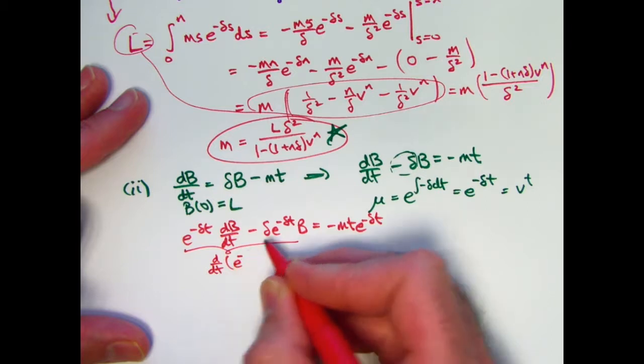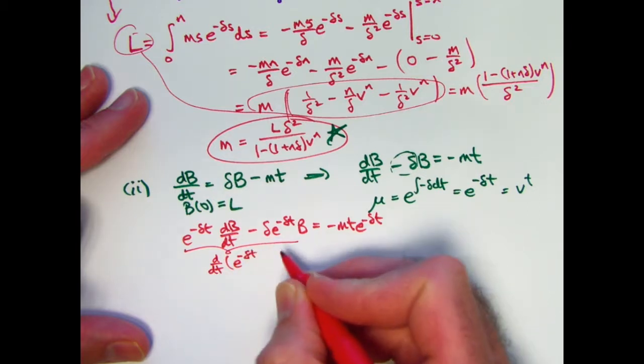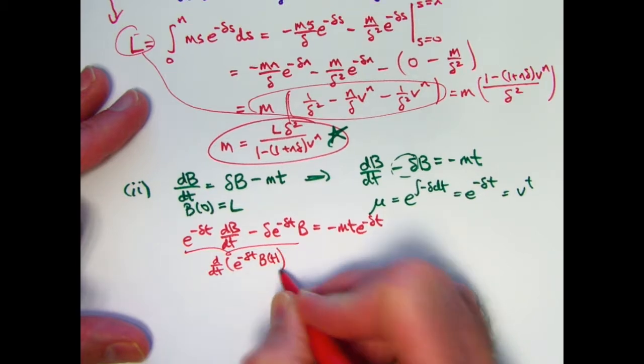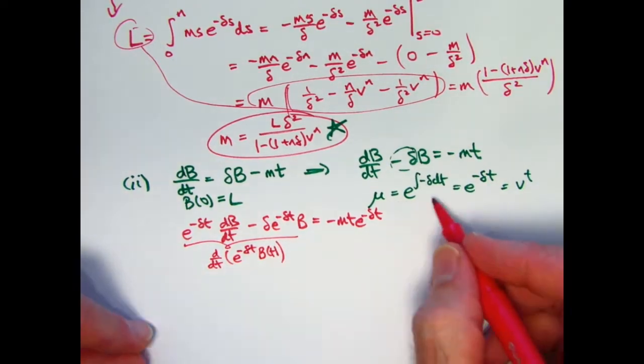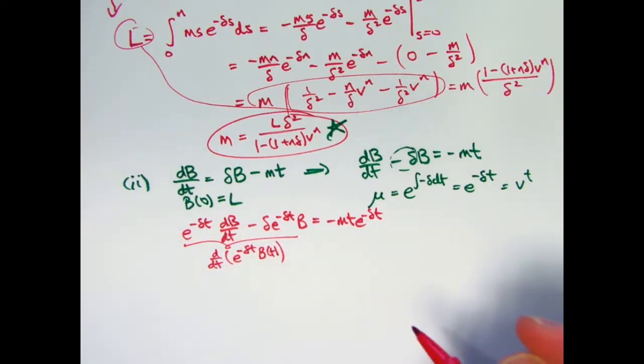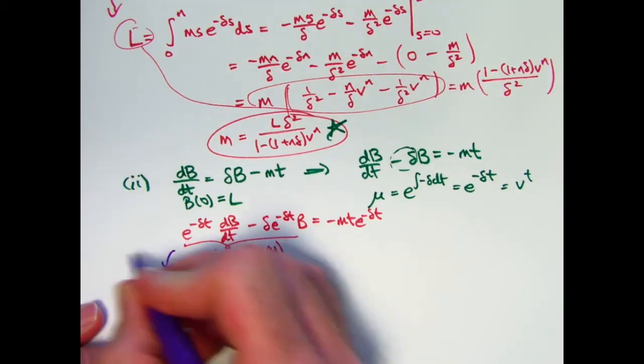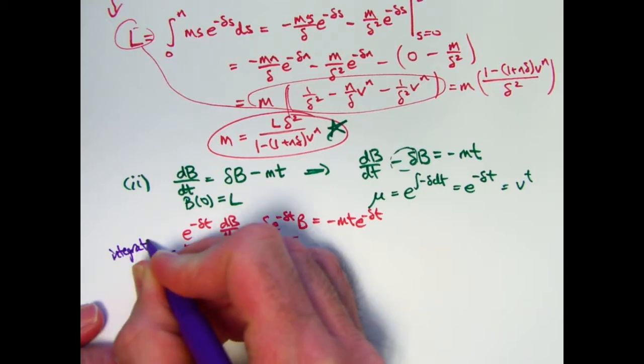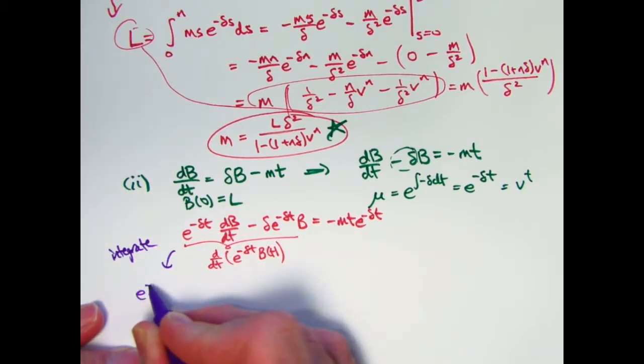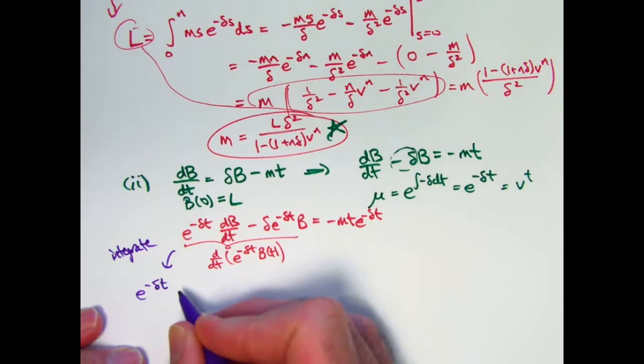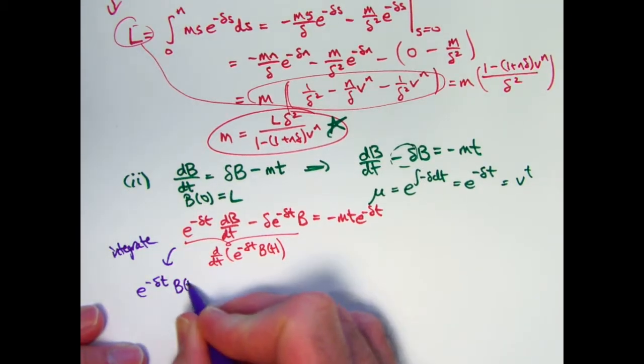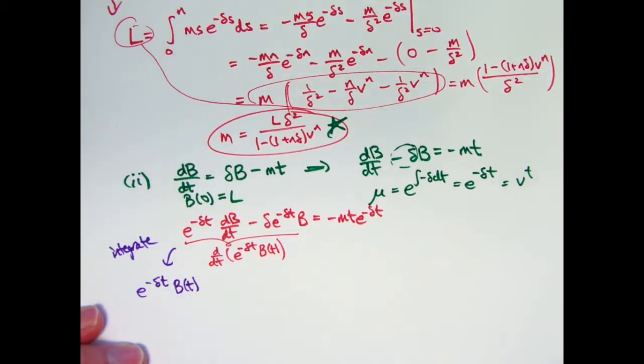This is done so that this thing is easy to integrate. By the product rule, this is the same as the derivative of E to the negative delta times T, times B of T. If you've never seen the method of integrating factors before, this choice of mu is what makes this left side easy to integrate. If you chose something different from mu, you might get something difficult to integrate. But it works out nicely because of the product rule. So now we integrate.